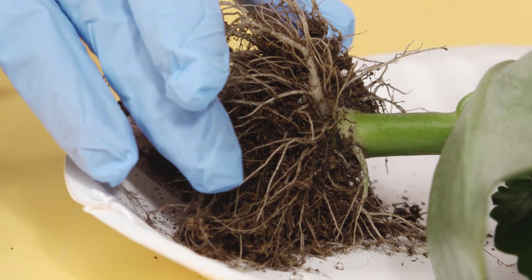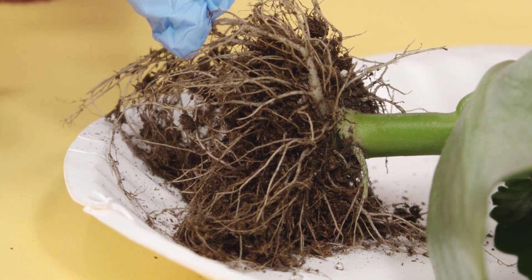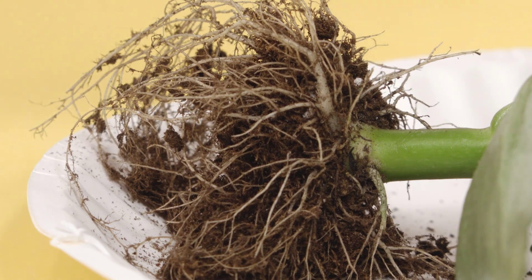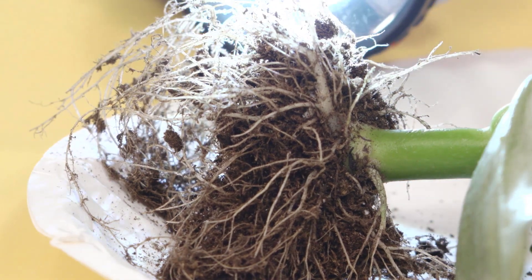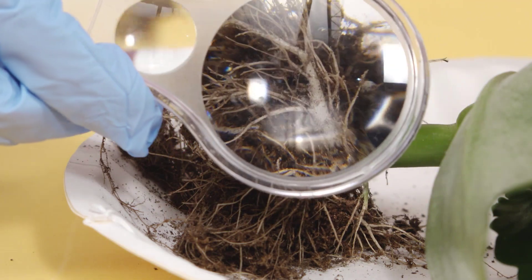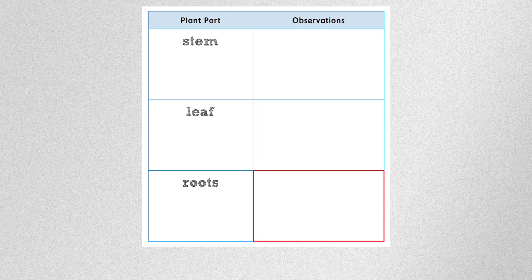What do the roots feel like? Are they stiff or do they bend? The roots bend. When you shine the flashlight on the roots, does the light go through them? What else do you notice about the roots? Write your observations of the roots in the right column of the data table. If you need to see the roots again, select Replay. When you've finished writing your observations, select Next.